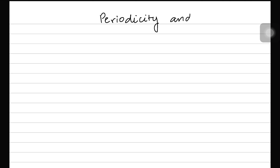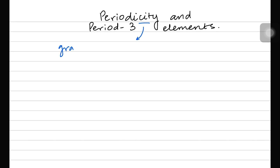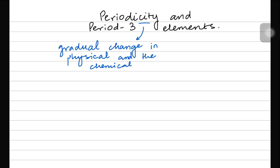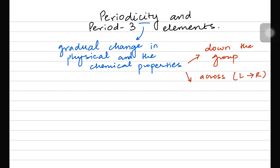Hey everyone, welcome back to another video. In today's video we'll be talking about periodicity, focusing on the AS level content of period 3 elements. Periodicity means a gradual change in physical and chemical properties. We'll be focusing on both physical and chemical properties, and things change in a way of gradation through the periodic table — either down a group or across a period. Down a group means top to bottom, and across means left to right.